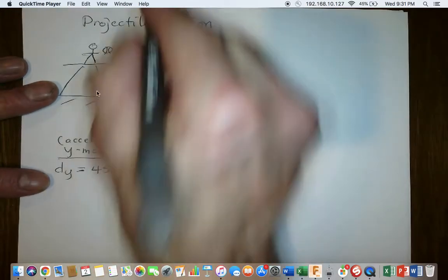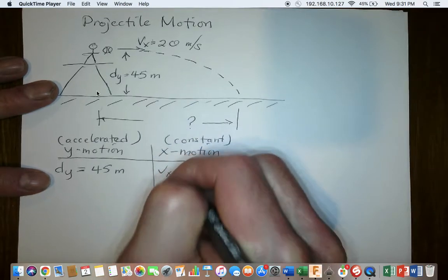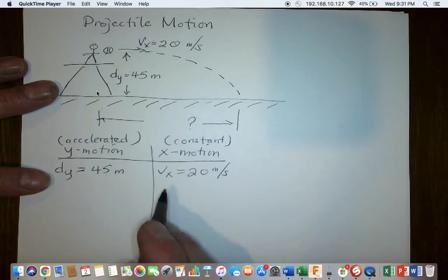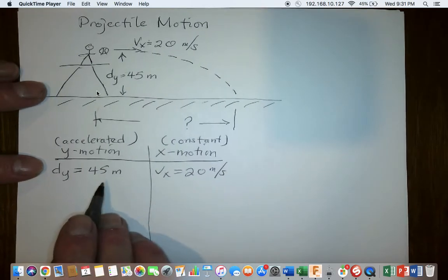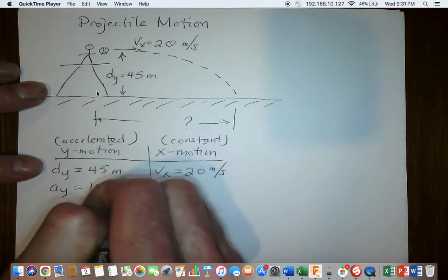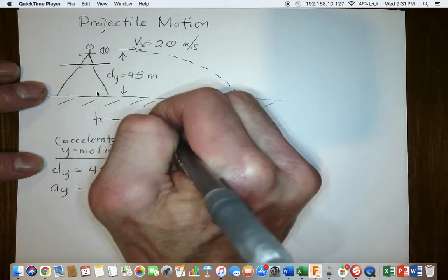We have a velocity. That's a velocity in the X direction. Put it in the X column. We know the acceleration due to gravity, but that's in the Y direction. We're looking for this distance. This is an X distance.